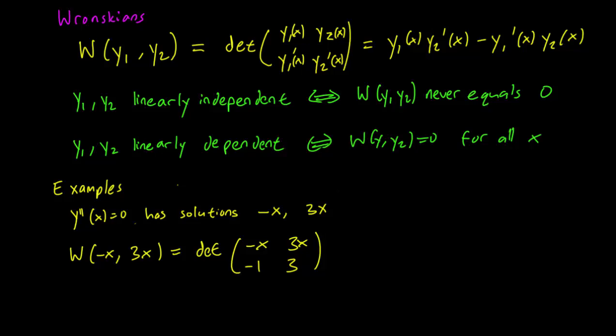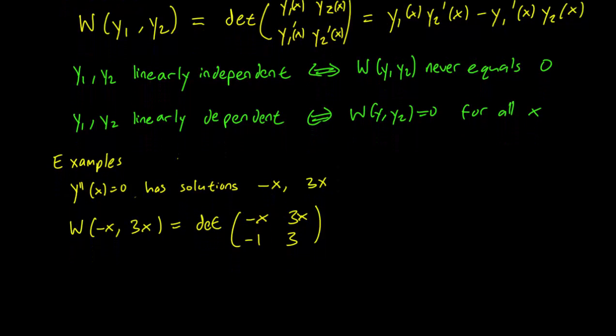Since minus 1 is the derivative of minus x and 3 is the derivative of 3x, we calculate the matrix determinant and we get minus x times 3 minus 3x times minus 1.